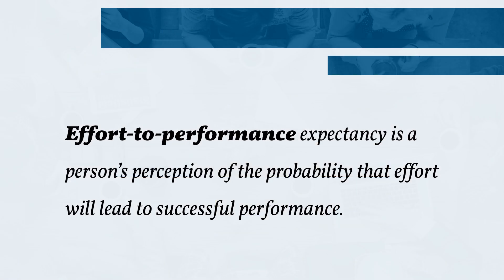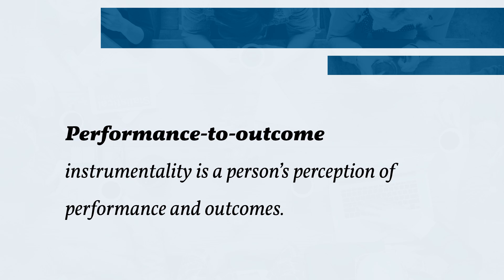Effort-to-performance expectancy is a person's perception of the probability that effort will lead to successful performance. Performance-to-outcome instrumentality is a person's perception of the probability that performance will lead to certain other outcomes.